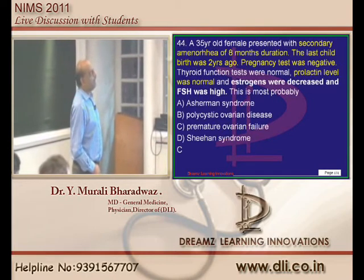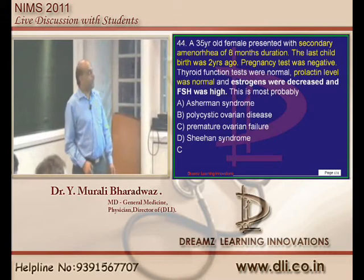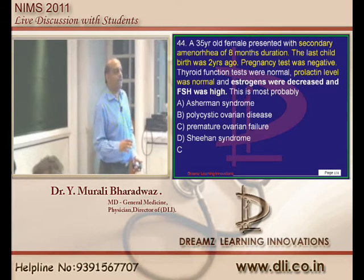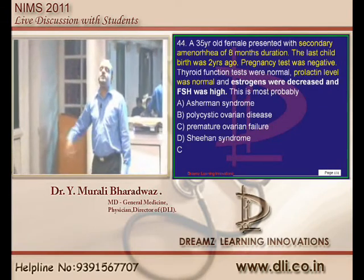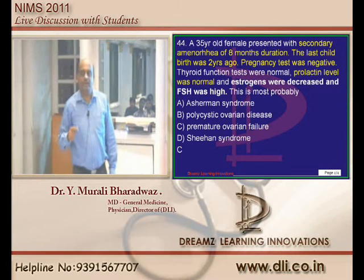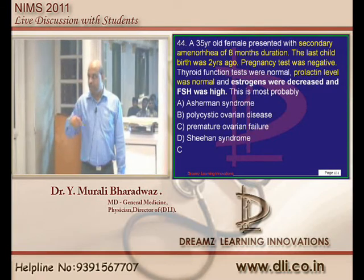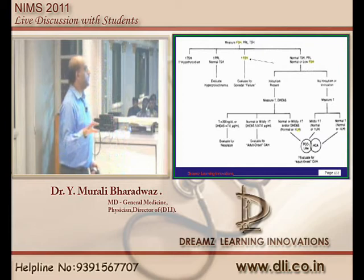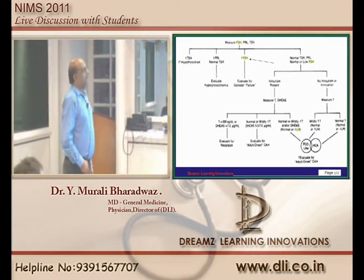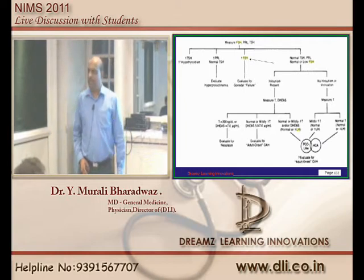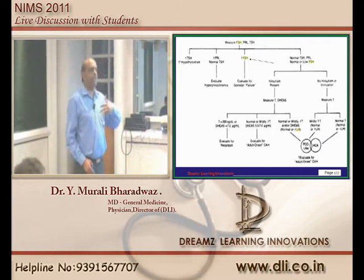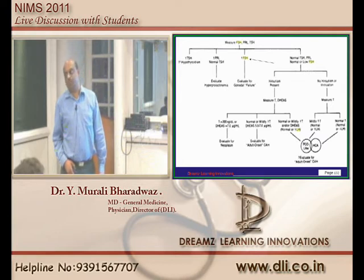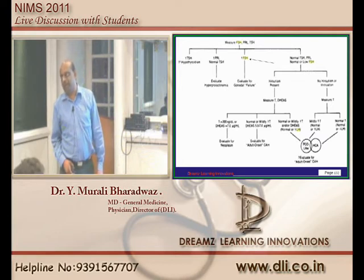A 35-year-old with secondary amenorrhea: pregnancy test negative, prolactin normal, but FSH is high and estrogen is low. Normally when estrogen is low, FSH is also low - then the pituitary is at fault. But if estrogen is low and FSH is high, that means ovarian dysfunction. The algorithm for approaching secondary amenorrhea based on hormonal profile will be discussed in regular class. Endocrinological approach to dysfunctional uterine bleeding and amenorrhea is a favorite topic of examiners.